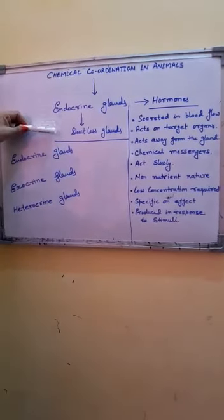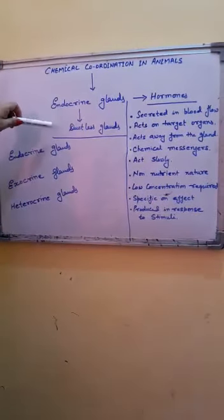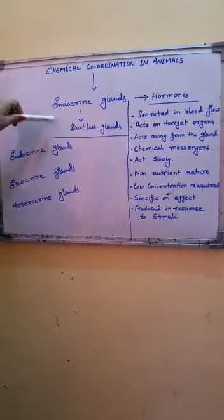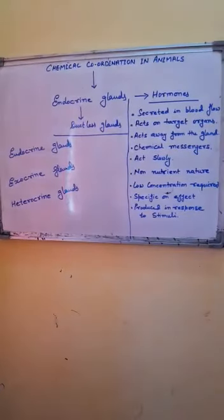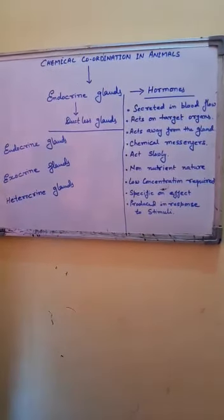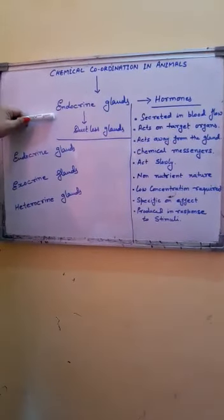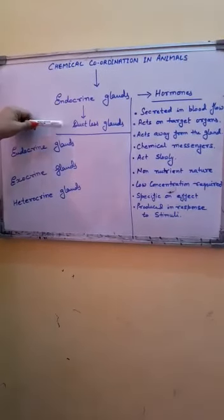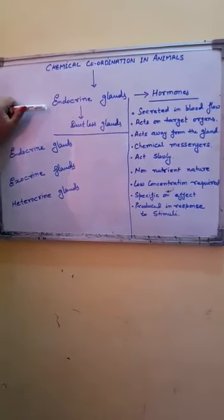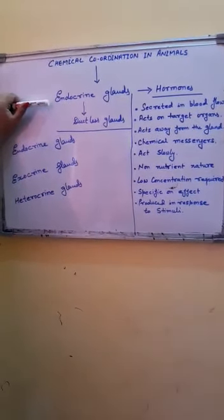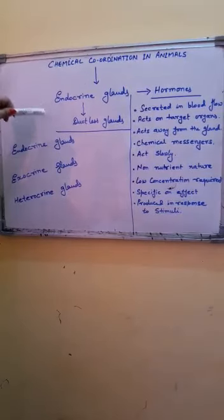Endocrine glands are also known as ductless glands. They are named so because these glands do not have any kind of duct — no tube or pipe — to release their secretion. These glands release their secretion directly into the bloodstream. A cell, tissue, or organ that produces a secretion is called a gland, and endocrine glands are glands which lack tubes or ducts, which is why they are called ductless glands. The hormones produced inside endocrine glands are directly poured into the bloodstream and travel inside the body via blood circulation.